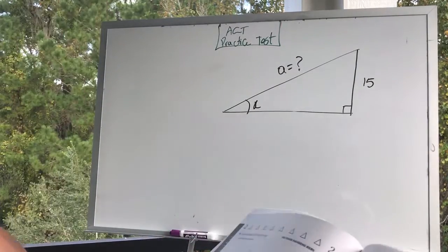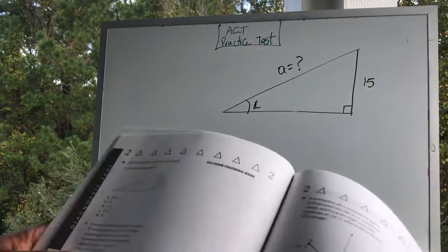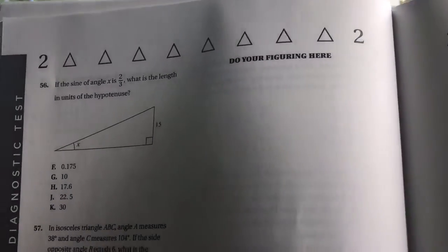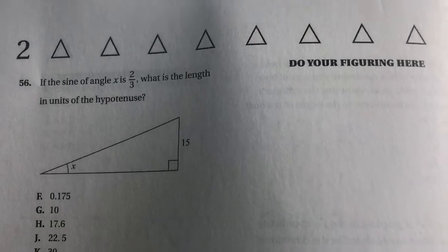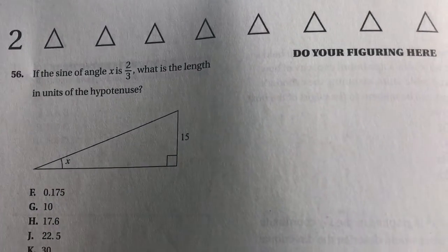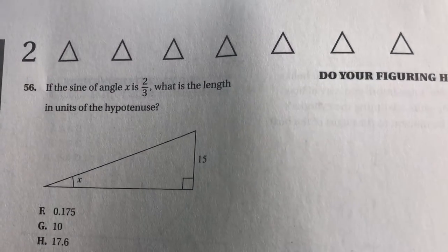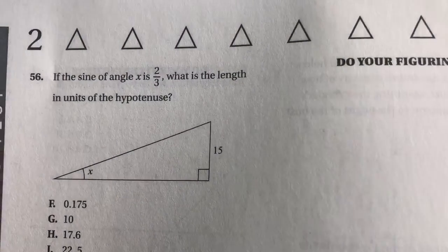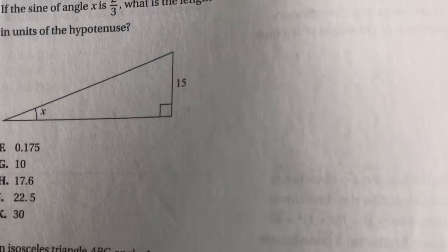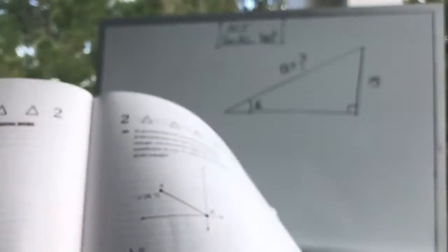Let's see. We have a triangle that you see on the board. So it says that if sine, if the sine of the angle x is equal to two-thirds, what is the length of the hypotenuse? And you have the answer choices and you have whatever we have on the board.